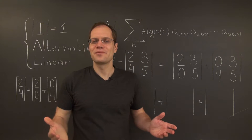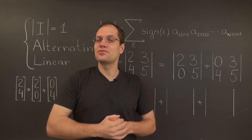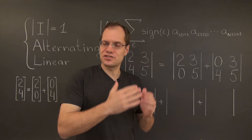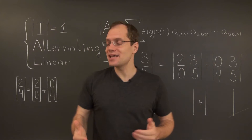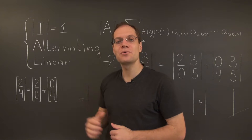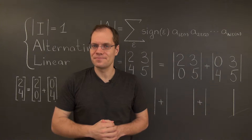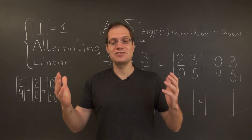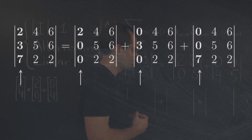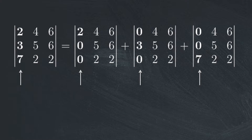What would we have done in the case of a 3×3 matrix? I would have thought of its first column as a sum of three vectors, each one with a single non-zero entry. Then that determinant could be represented as a sum of three determinants, where the first column is borrowed from each one of these three vectors and the remaining two columns are the same.